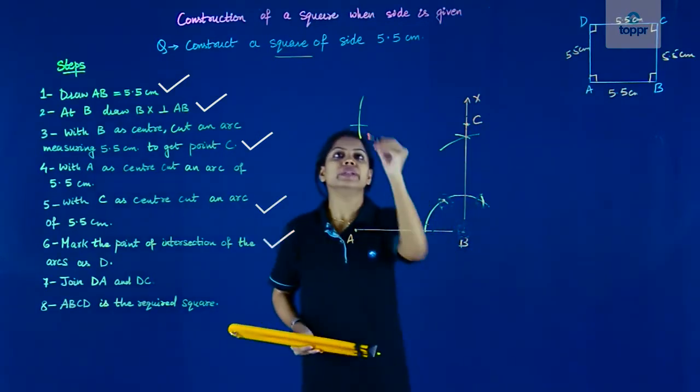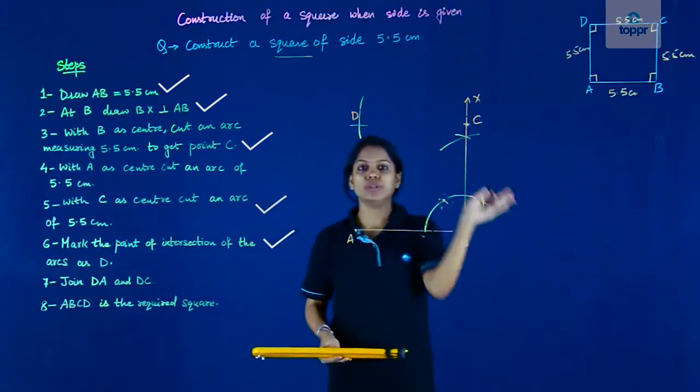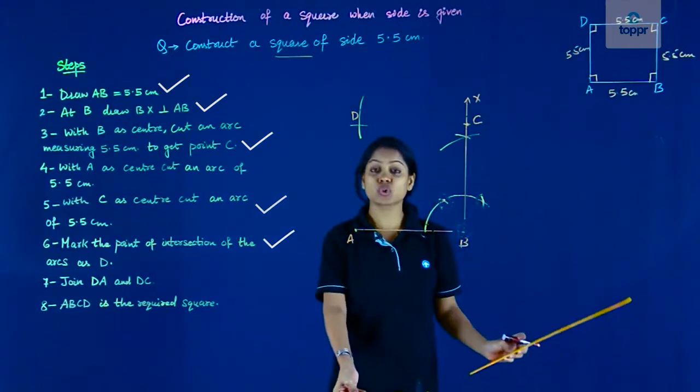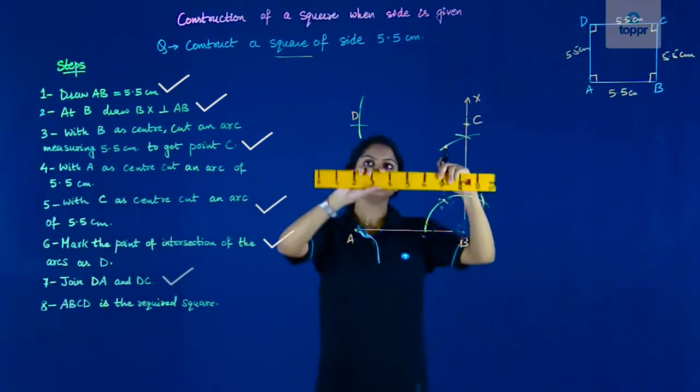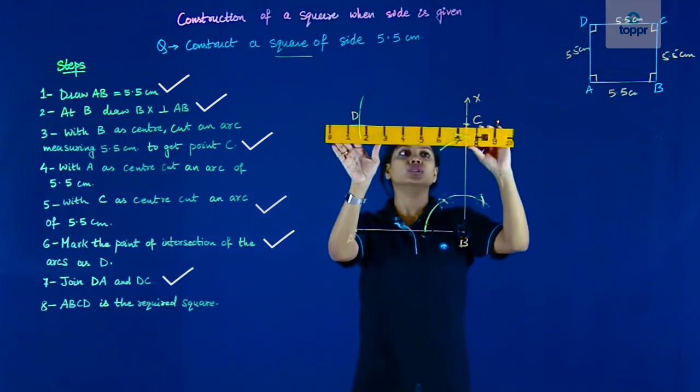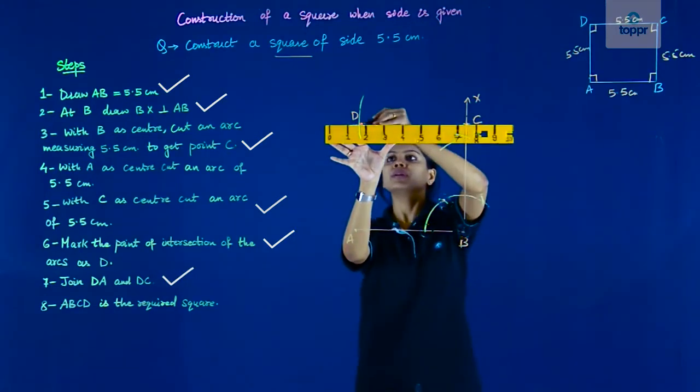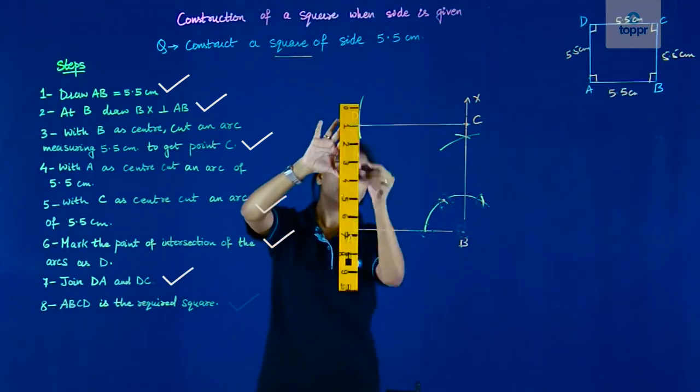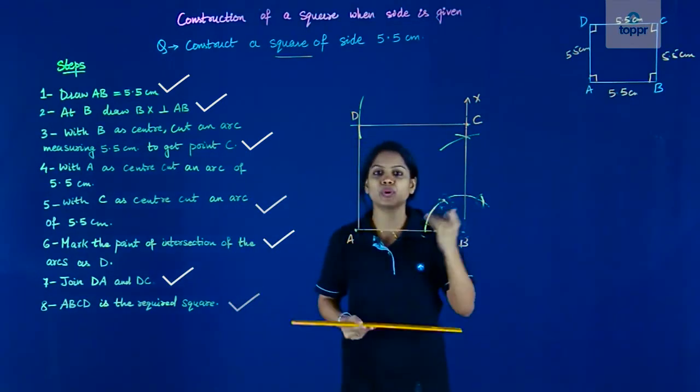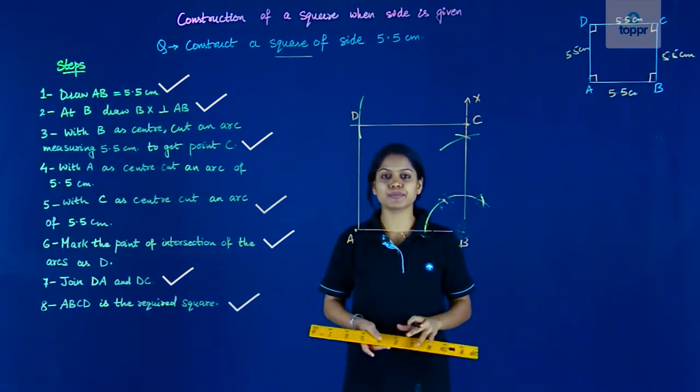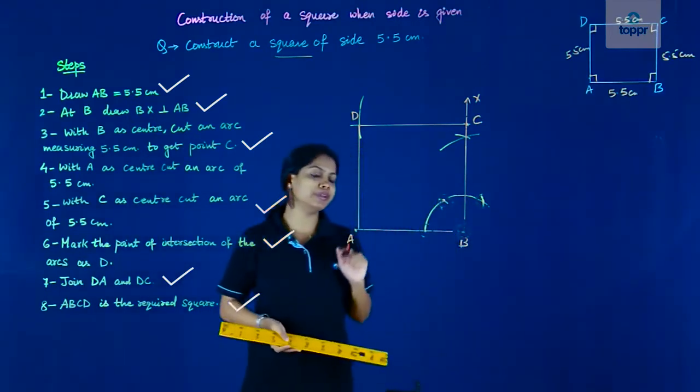All we need to do is name the point and join it to get the square A, B, C, D. I'll first join C to D. This is my required square ABCD. Very simple. Let's have a quick look of what we did. Okay?